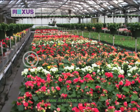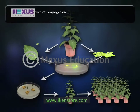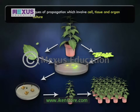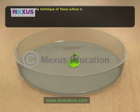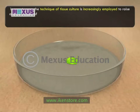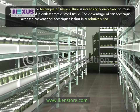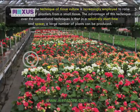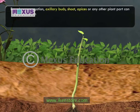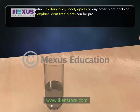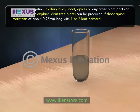Tissue culture techniques are now being used for effective vegetative propagation of several horticultural and agricultural crops. These techniques of propagation which involve cell, tissue and organ culture are collectively called micropropagation. In recent years, the technique of tissue culture is being increasingly employed to raise a large number of plantlets from a small tissue. For micropropagation, axillary buds, shoot apices or any other plant part can be used as an explant. Virus-free plants can be produced if shoot apical meristems of about 0.25 mm long with one or two leaf primordia are inoculated.